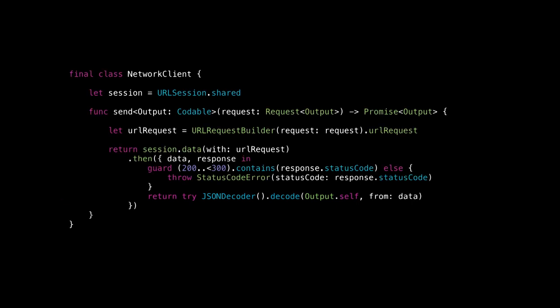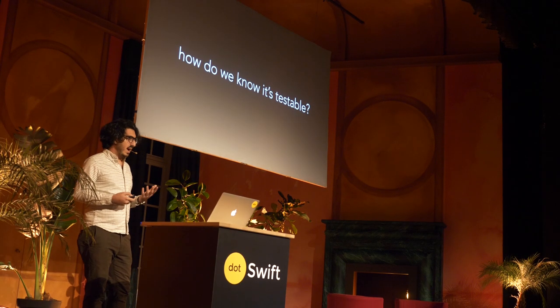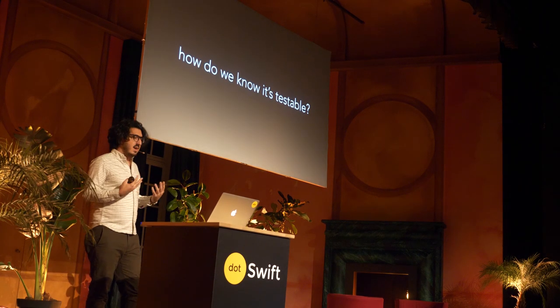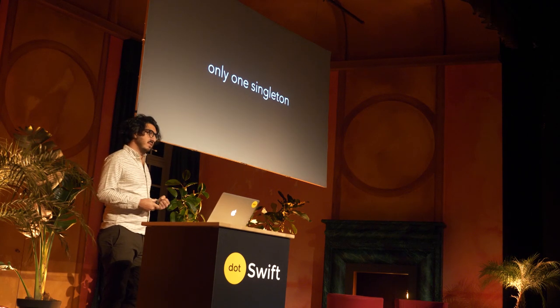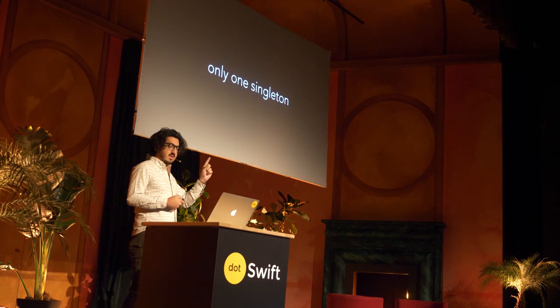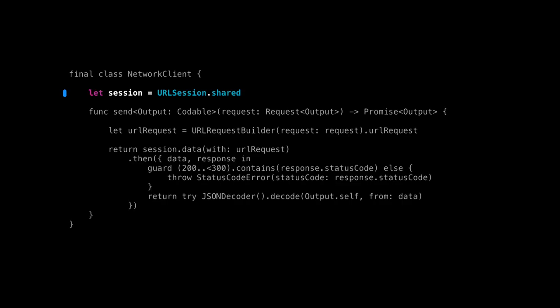This is our class, and I like this class. Why? Because it's very simple. I like this class because it's testable. How do we know it's testable? We can look at branches, but one really simple way is to look at singletons. And this class has exactly one singleton: urlsession.shared.